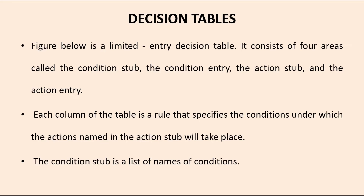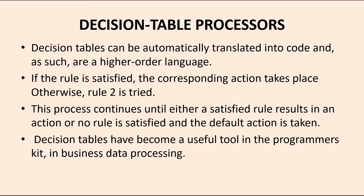The condition stub is normally a list of names and conditions. Decision tables can be automatically translated into code in a higher-order programming language. If any rule is satisfied, the corresponding action takes place; otherwise it goes to the next rule. This process continues until any one rule is satisfied.